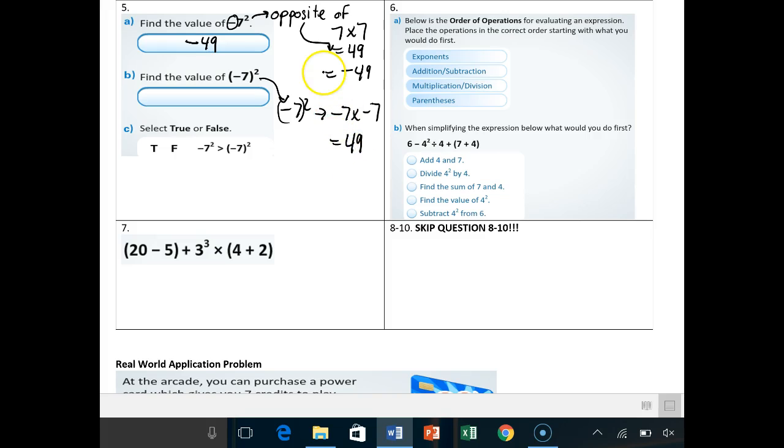Why do I do that? Because two negatives, a negative times a negative is a positive. So I get a positive 49. So no parentheses, it's negative. Parentheses, I'm saying, okay, I want to take that actual number.